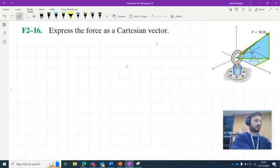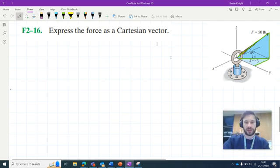Okay, so hello and welcome to this video tutorial for Engineering Mechanics Statics by R.C. Hibbler. We have this problem from chapter 2 of the textbook that is asking express the force as a Cartesian vector where we have this diagram of a 50 pound force acting in 3D space.